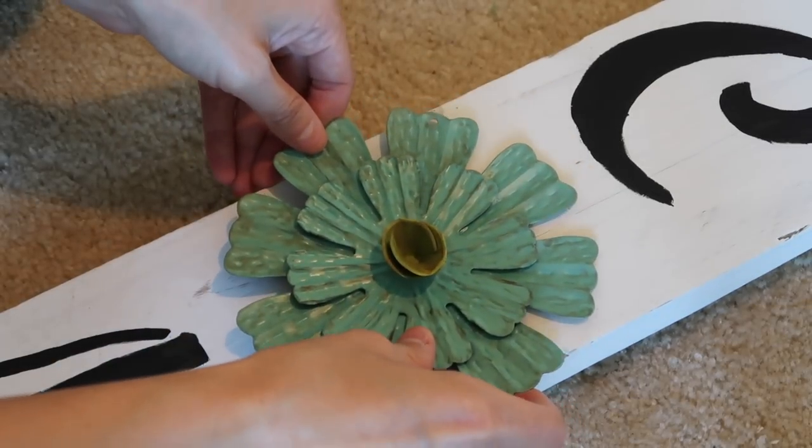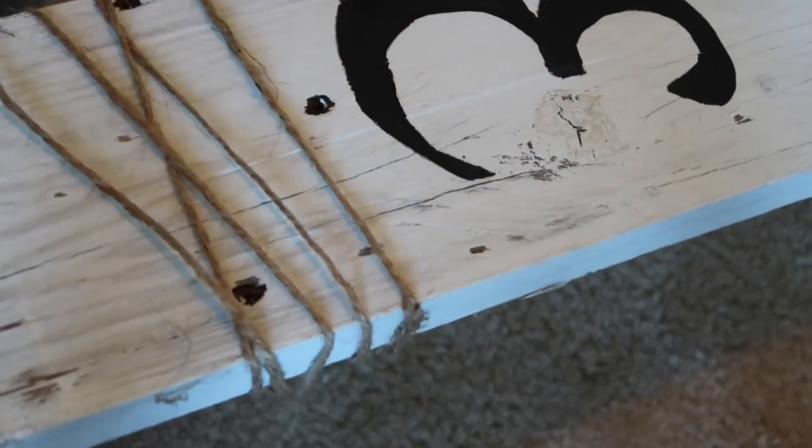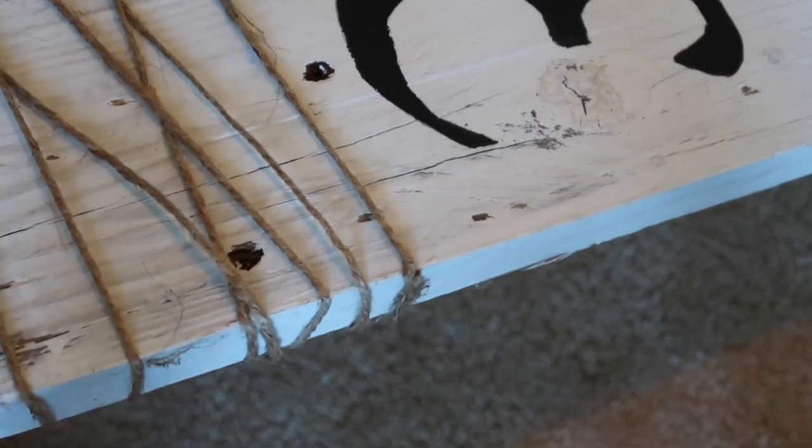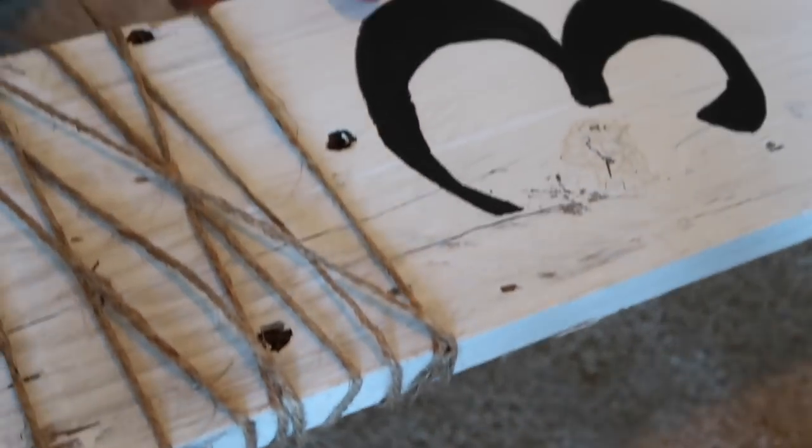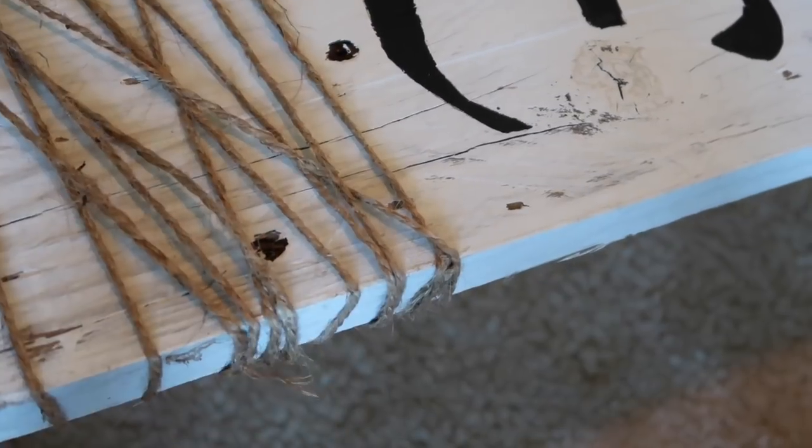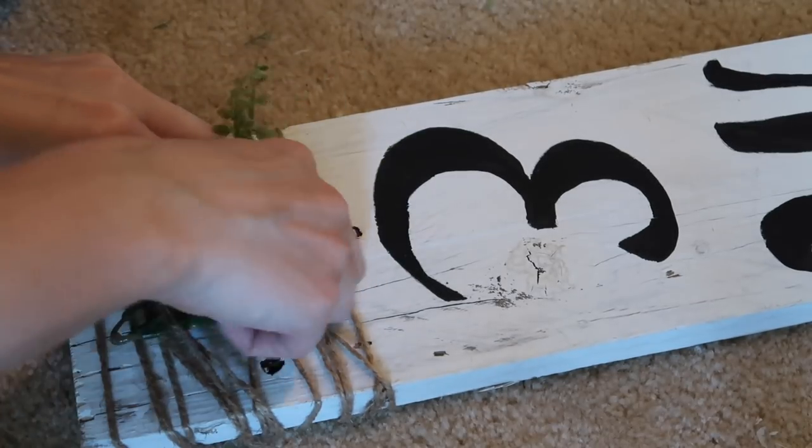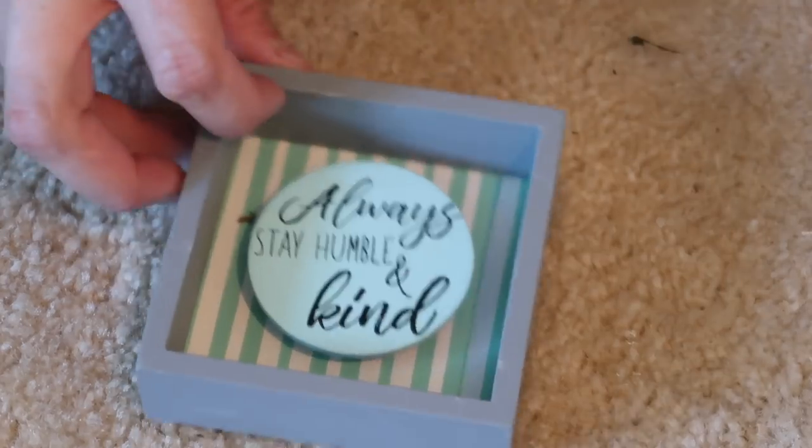And then once everything was dry I just took some hot glue and glued this flower right to the sign and I just used that as my O for the welcome sign. And then I just like wrapping twine around the top and the bottom of the signs so that's exactly what I did. I made something pretty similar last year with the same piece of board, I just kind of flipped it around but I wanted something just a little bit different this year.